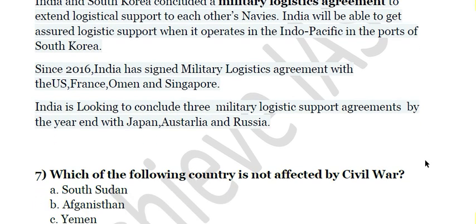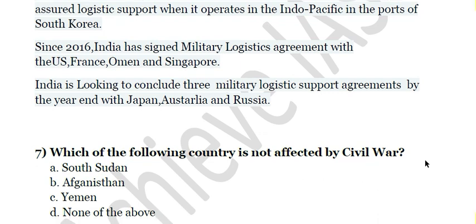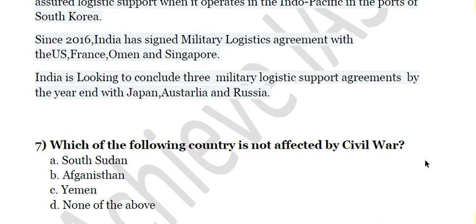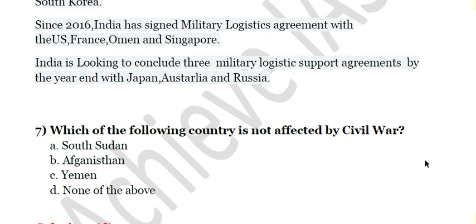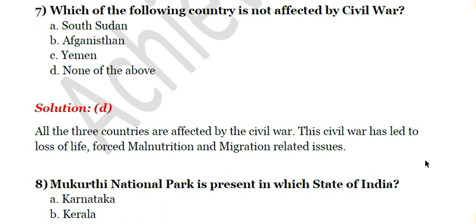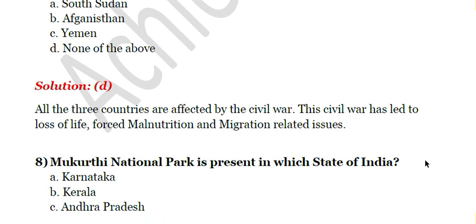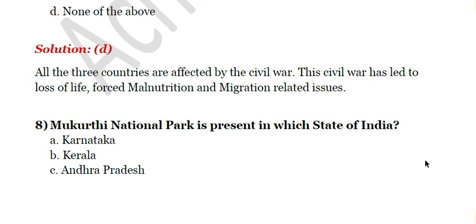The seventh question: Which of the following countries is not affected by civil war? A) South Sudan, B) Afghanistan, C) Yemen, D) None of the above. The answer is D — none of the above — because all these countries are affected by civil war in one way or another. Civil war causes loss of life, malnutrition, migration, violence against women and children, and many other problems.